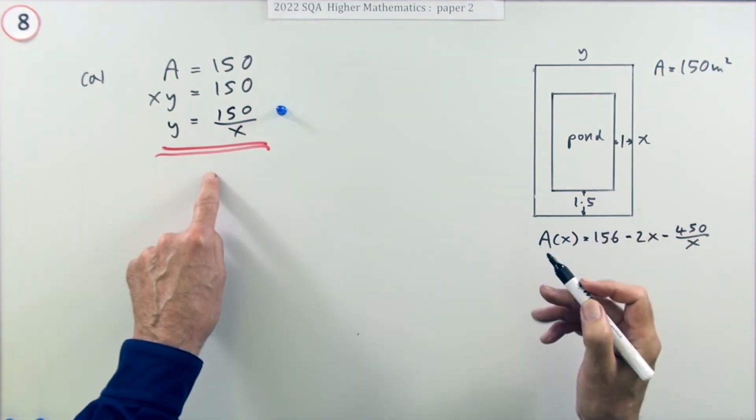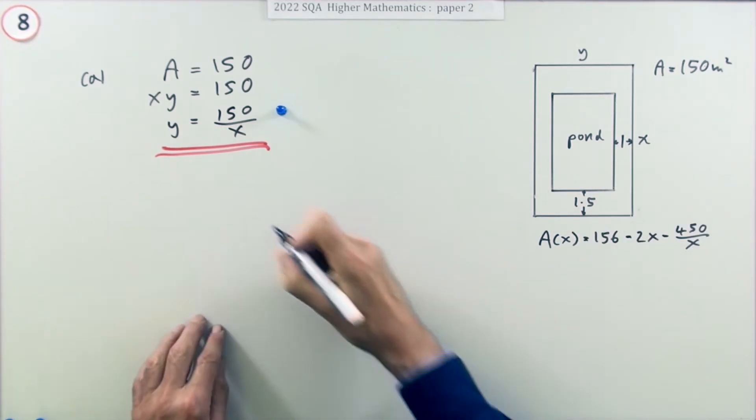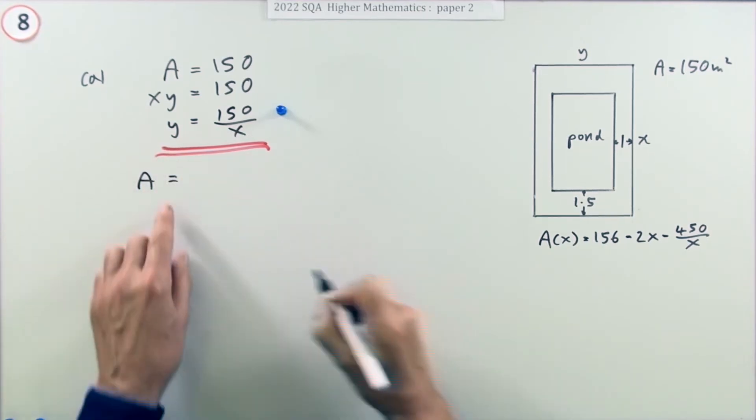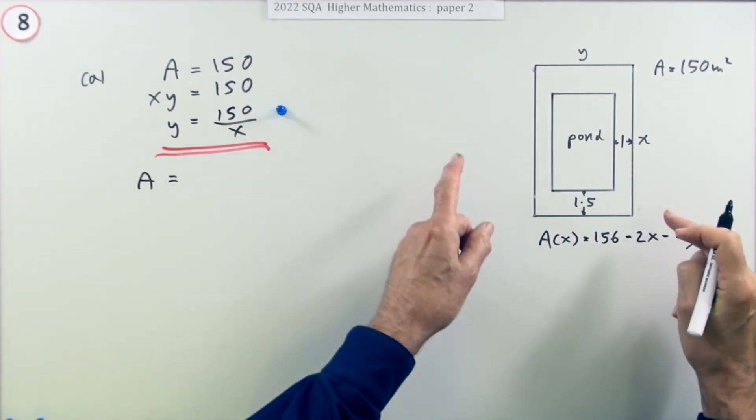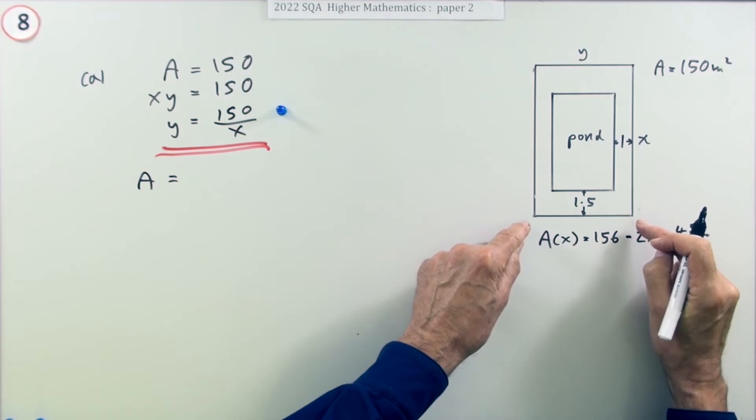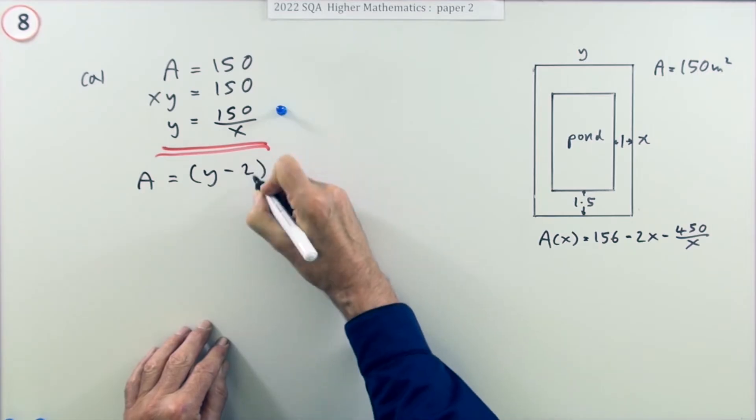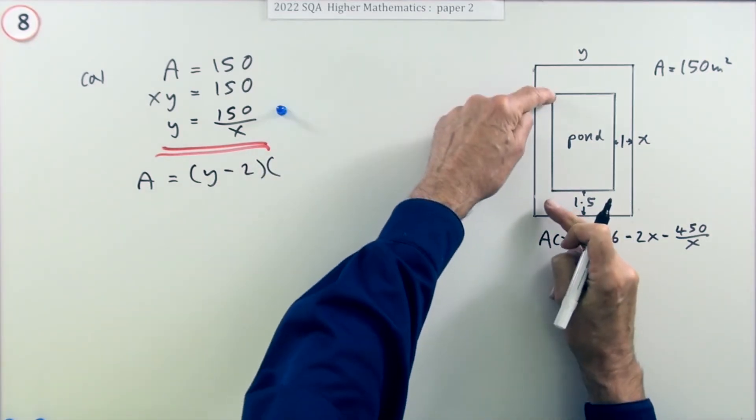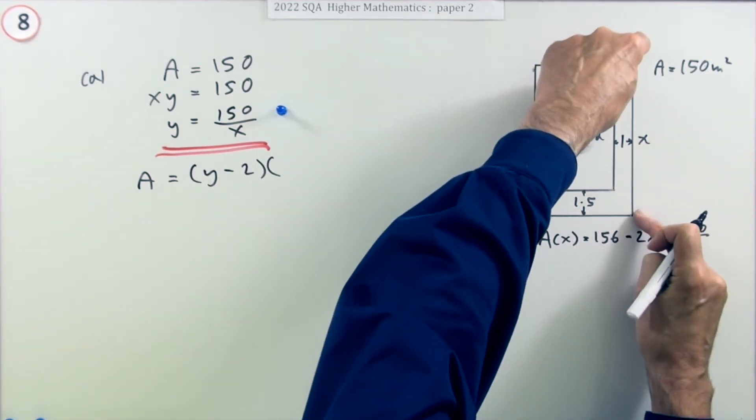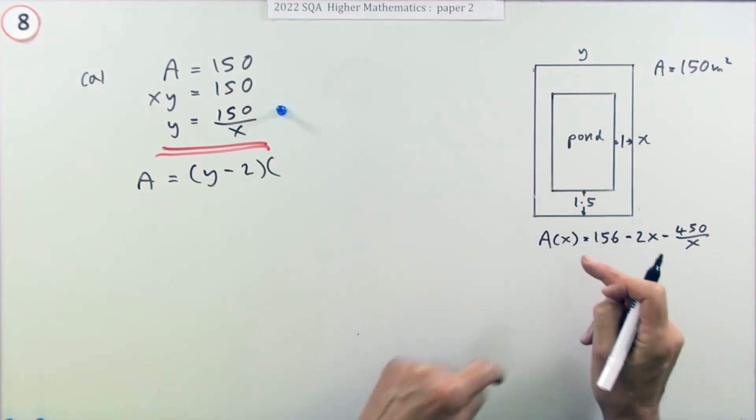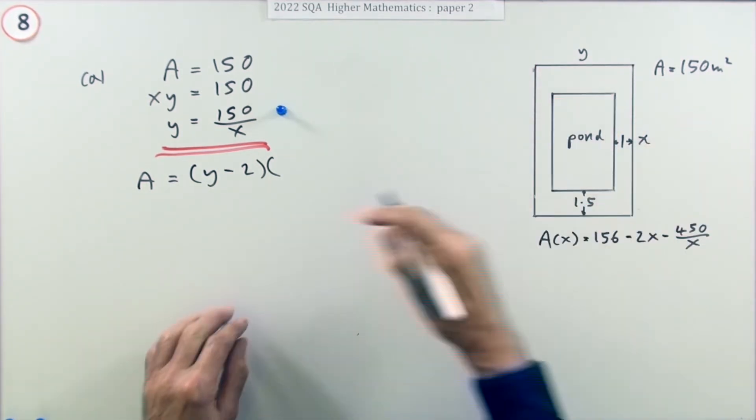What's the area of the pond? Well, its width isn't y, its width is two less than y. What's its height? It's not x because it's in a bit and down a bit, so it's three less than x.